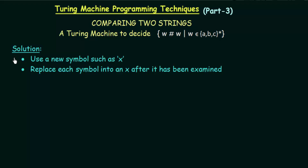Here is a solution: use a new symbol such as x and replace each symbol with x after it has been examined. That means we examine the symbols of the string, and all symbols that have been examined are replaced with x if they follow our criteria. Our criteria is that the first half should be equal to the second half.